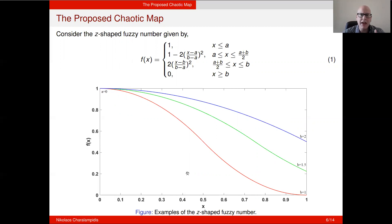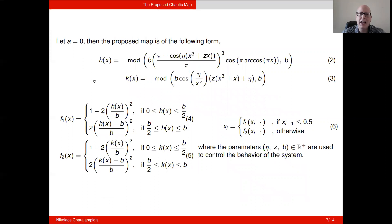To introduce the system, the first thing we do is we let A to B equal to zero, and then we introduce the H(X) and K(X) functions, which we use in order to modify the Z-shaped fuzzy number and obtain the F1 function and the F2 function, which finally we use in order to construct our piecewise chaotic map in equation 6, where the parameters eta, Z, and B are positive real numbers and are used to control the behavior of the system.